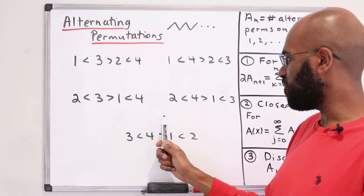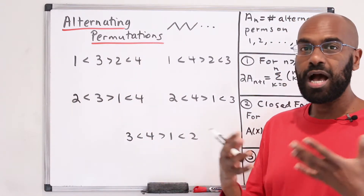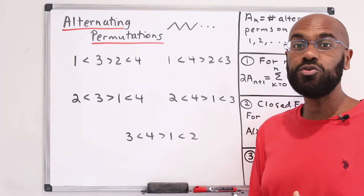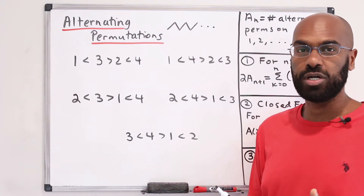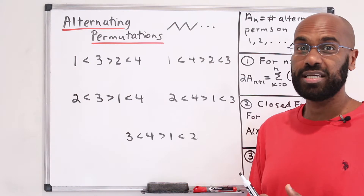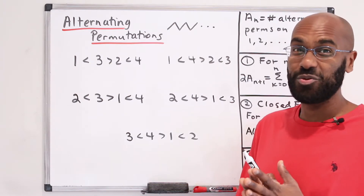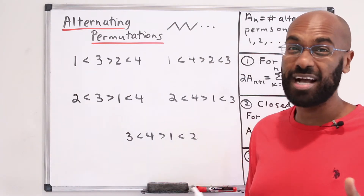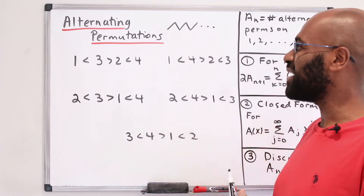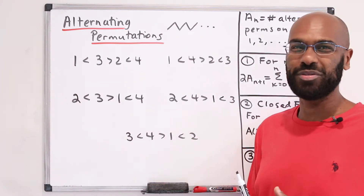And here we have 3, then 4, then 1, then 2. So our question is how many of these are there? We're going to use generating series to analyze this question, and the answer is going to take us to some really interesting math. So stay tuned for this investigation of alternating permutations.